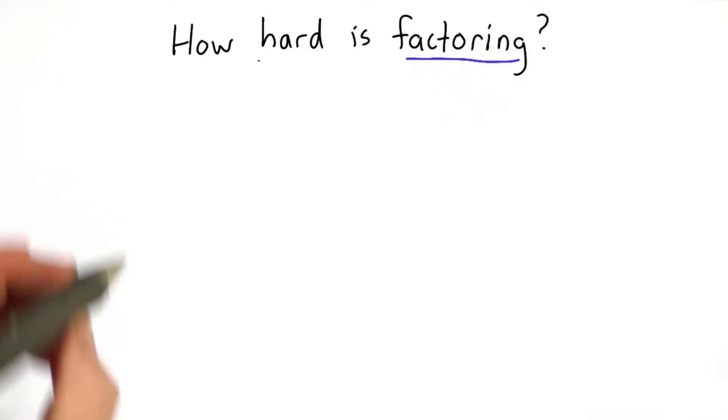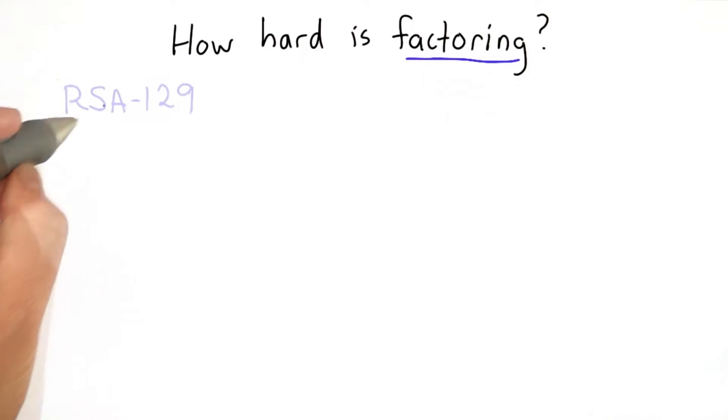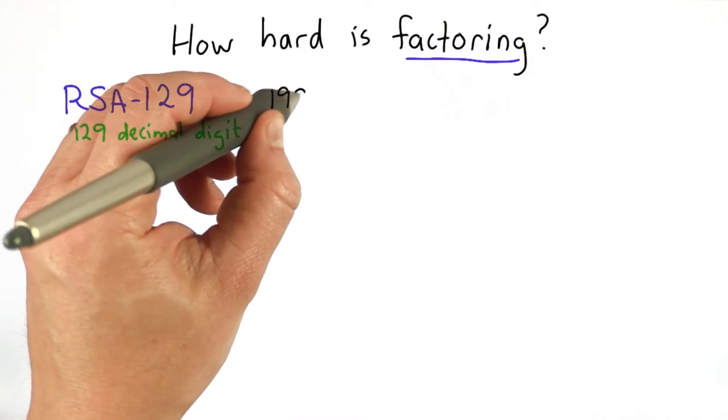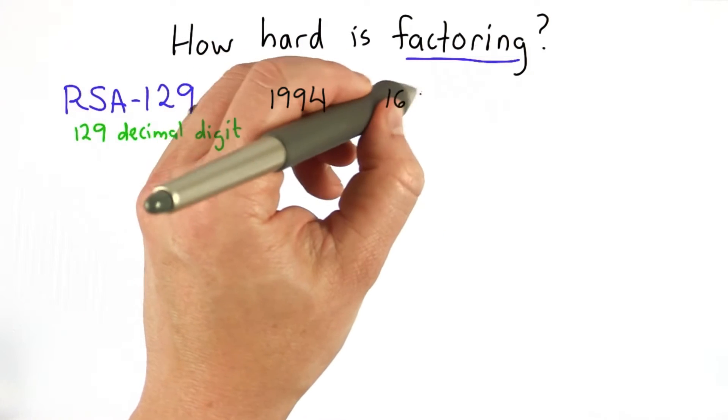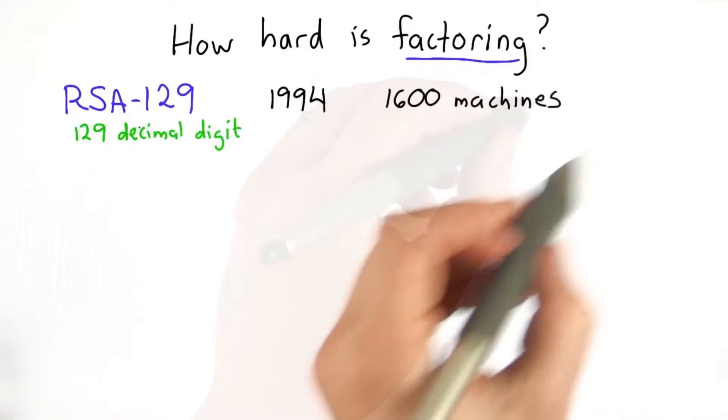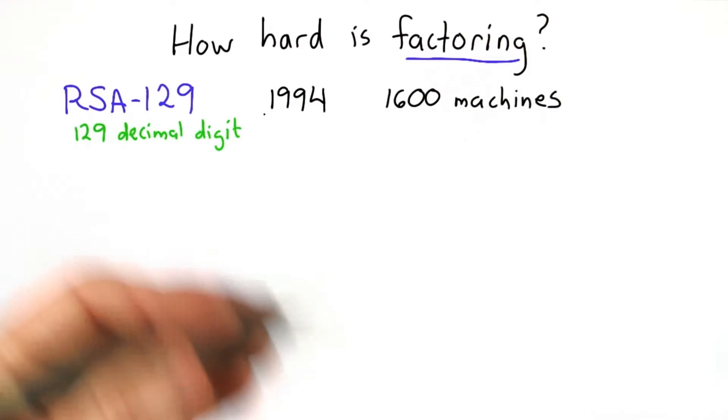This gets back to the fundamental question we have of how hard is factoring. We saw that it was possible to factor 129 decimal digits in 1994, and the computing resources to do this were about 1,600 machines collaborating on the internet. Certainly that's much less than many people have access to today.